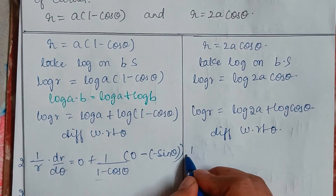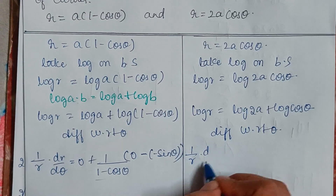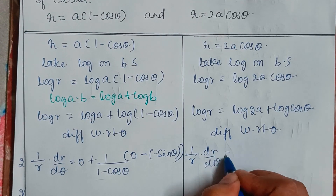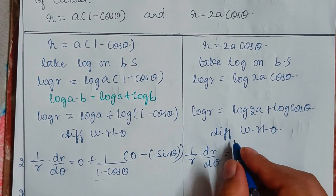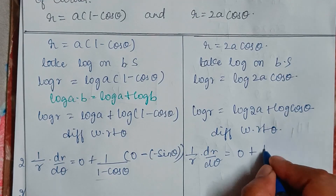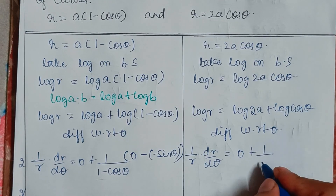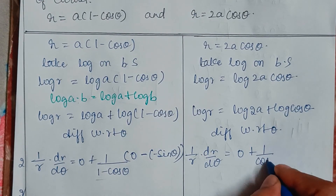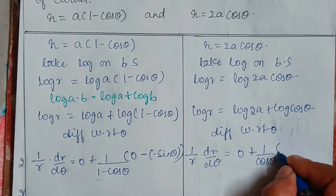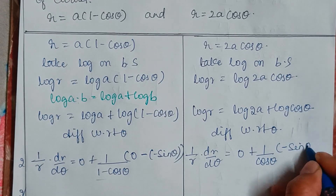For the second curve, differentiation of log R gives 1 over R times dR/dθ equals 0 plus 1 over cos theta, multiplied by the differentiation of cos theta, which is minus sine theta.